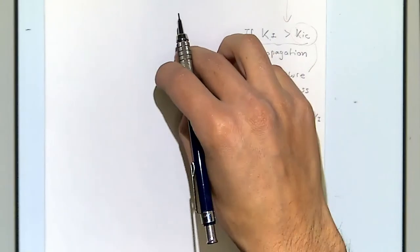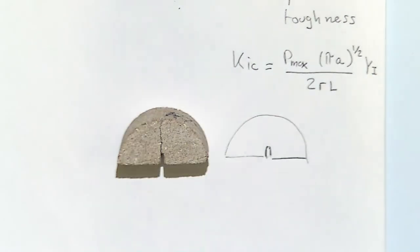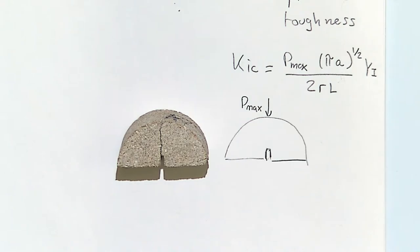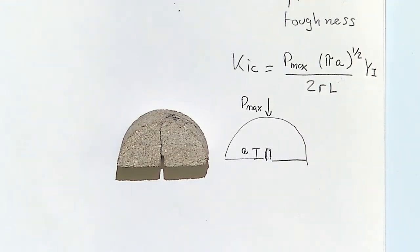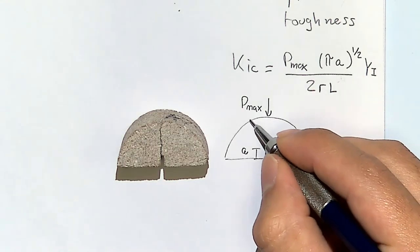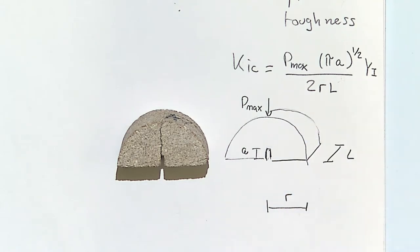Before failure we have this notch. This is the maximum force which we say is about 70 pounds. This 'a' is the length of the notch - we're going to see that's something very important later on. R is the radius of the cylinder, L is the thickness of the sample.